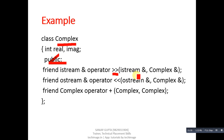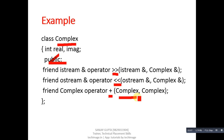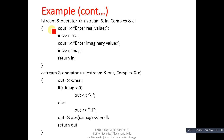It will receive two references — one for istream and another for complex. The second method is for insertion, which is similar to extraction. The third method, plus, will return a complex object and will receive two arguments of complex type. Now, for the definition of the first method which is extraction, the return type is istream reference.